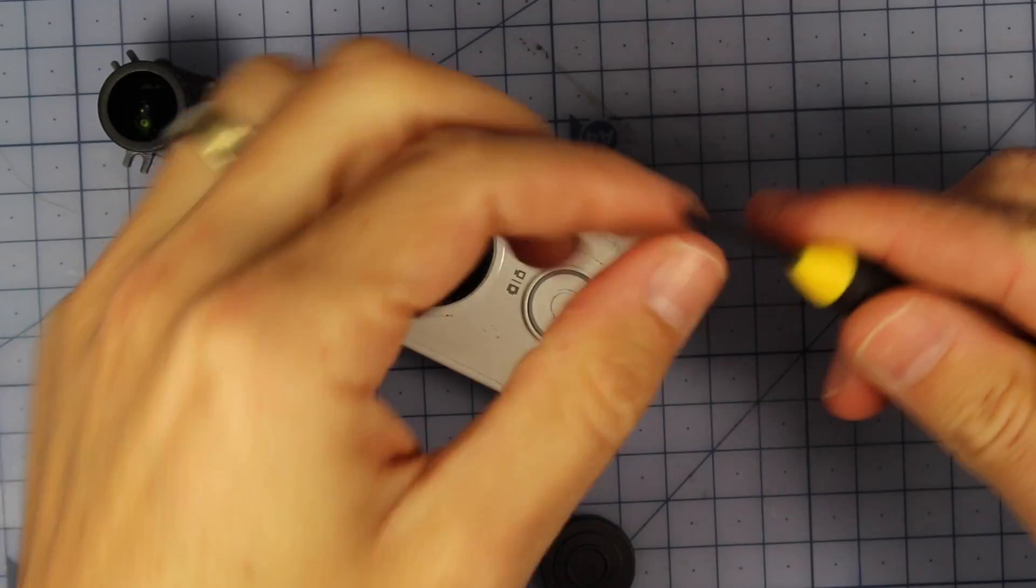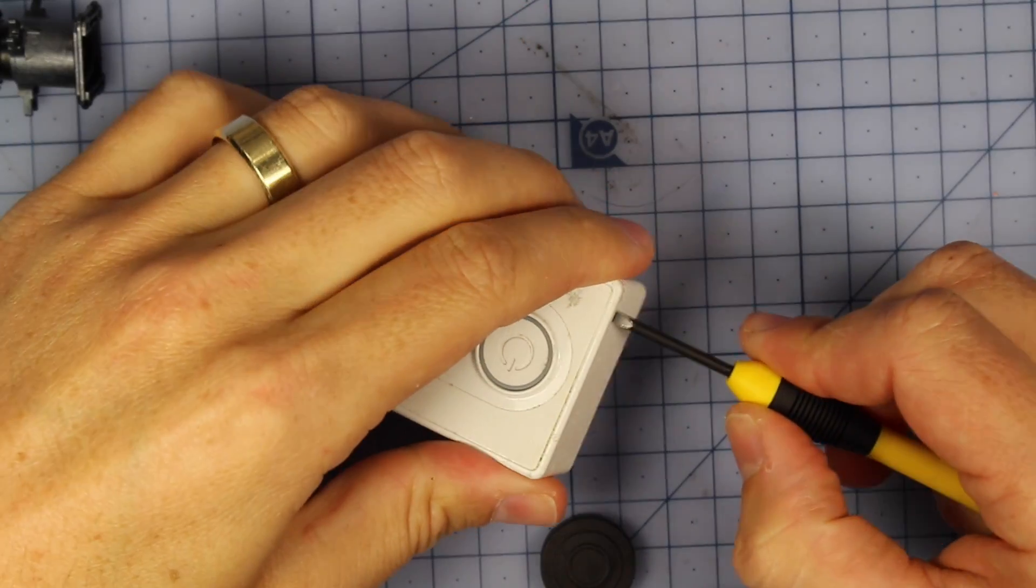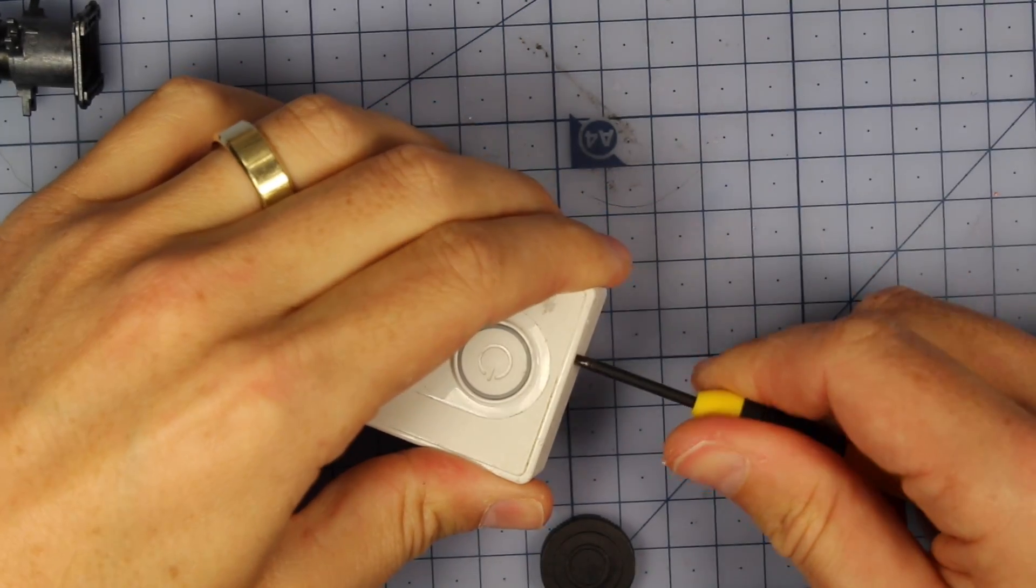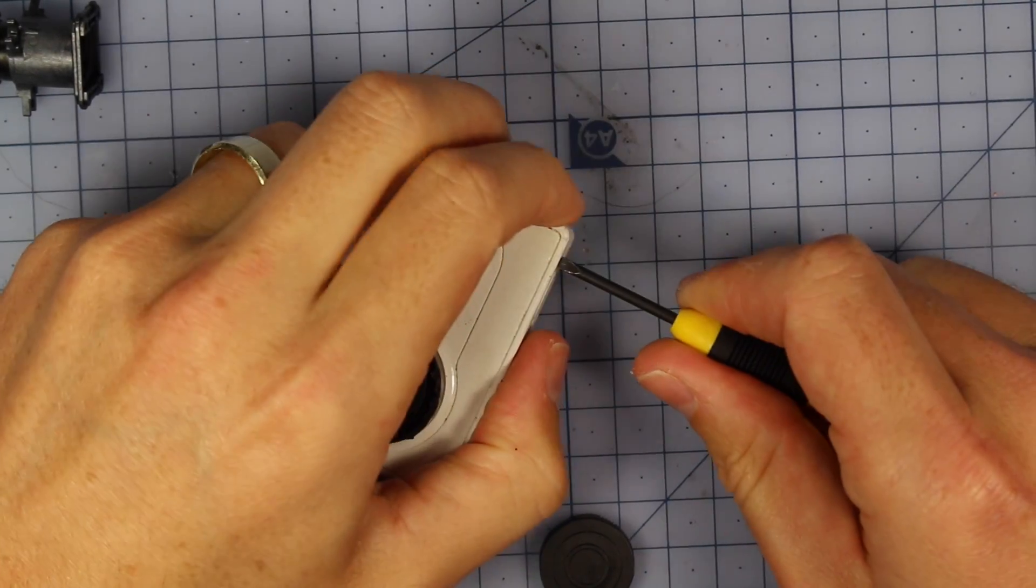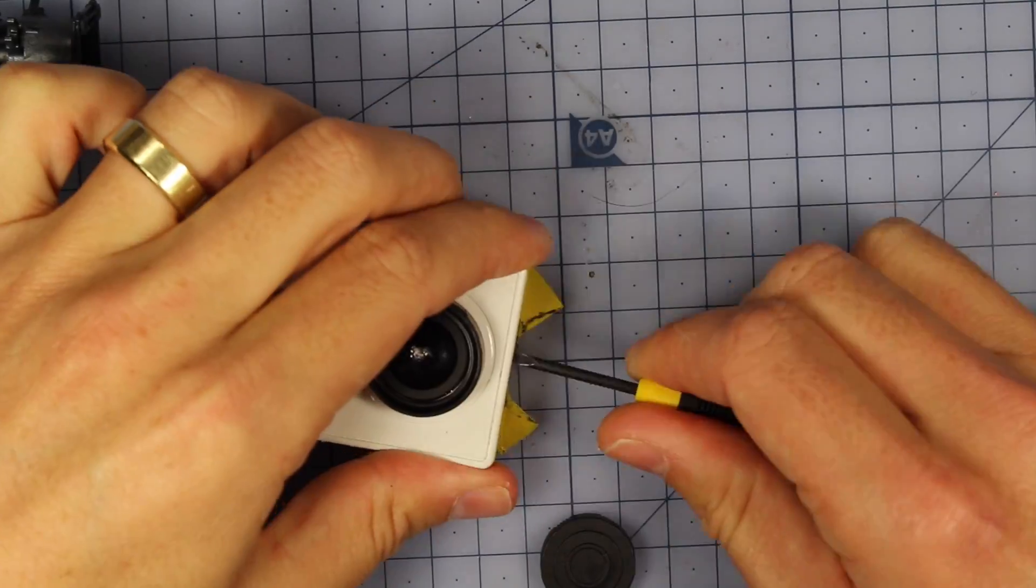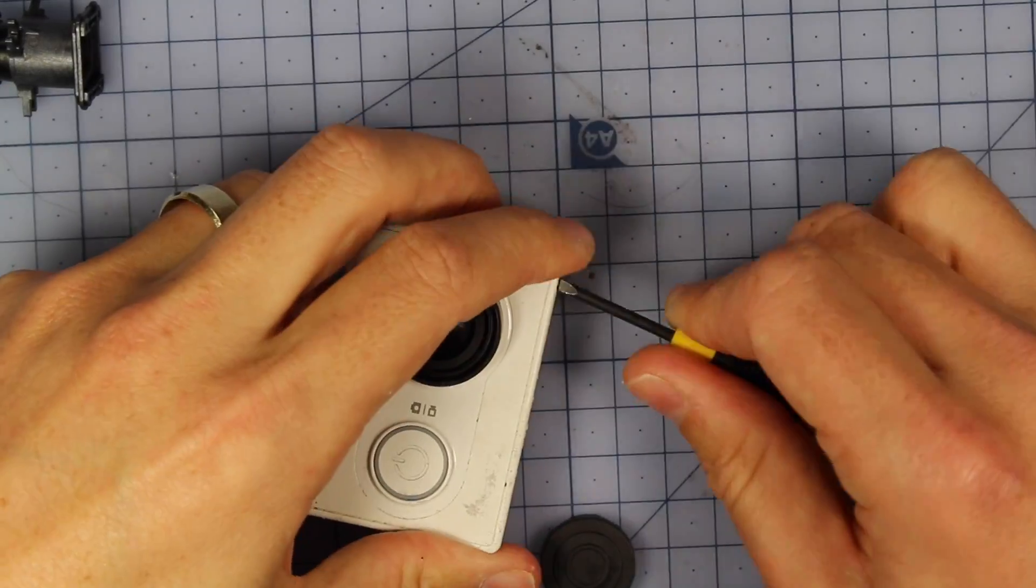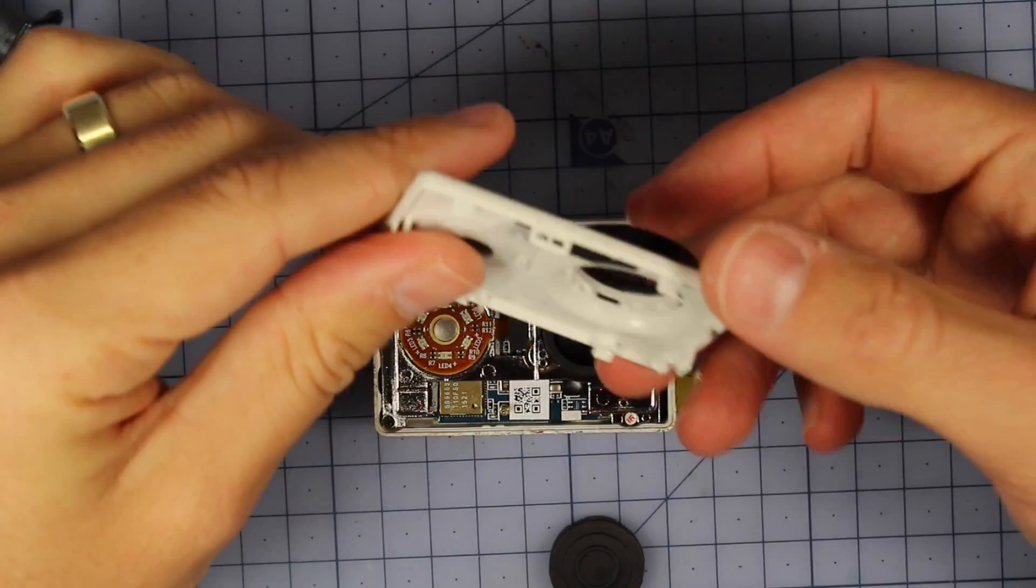The way I'm doing this, I'm just putting my screwdriver in a little bit and then just turning it. Going around part by part and then just using it to pry it open. All right, so there's the front of the case coming off.